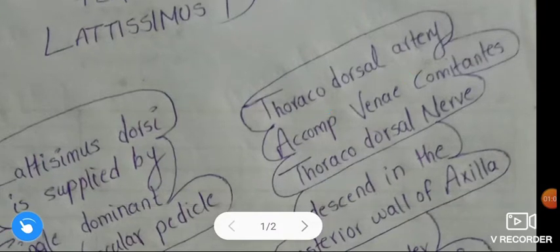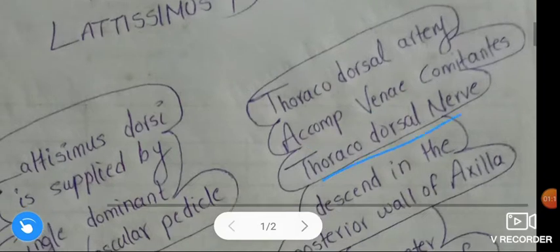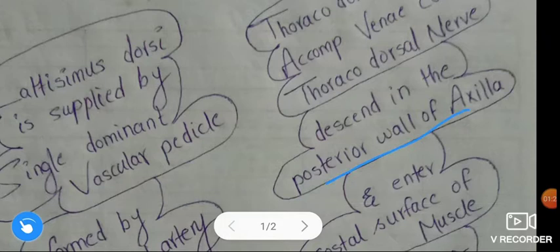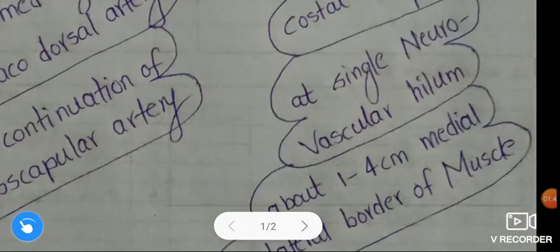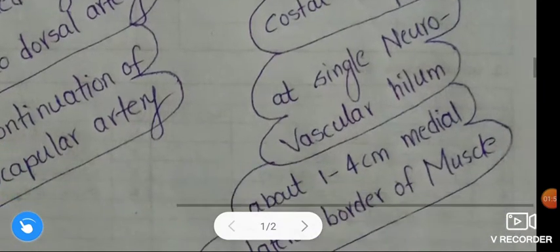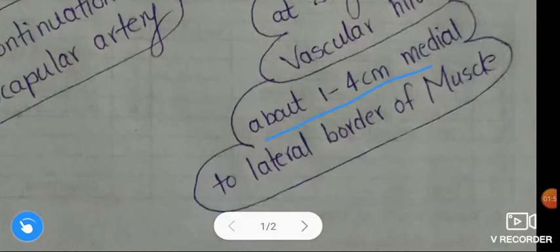The thoracodorsal artery and its accompanying venae comitantes and thoracodorsal nerve — these three descend in the posterior wall of the axilla and enter the costal surface of the latissimus dorsi muscle at a single neurovascular hilum, about one to four centimeters medial to the lateral border of the muscle.